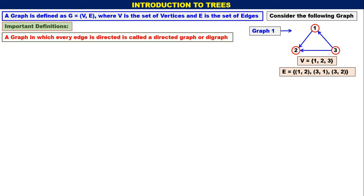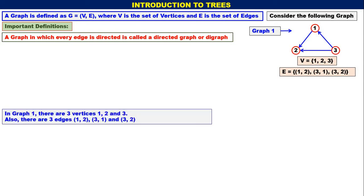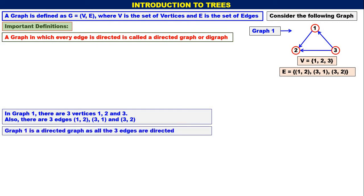A graph in which every edge is directed is called a directed graph or digraph. In Graph 1, there are three vertices: 1, 2, 3, and there are three edges. In Graph 1, all three edges are directed. Therefore, it is a directed graph — Graph 1 is a directed graph.